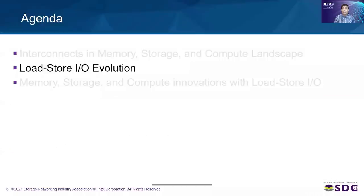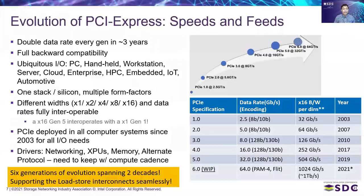We will now delve into the evolution of load store interconnect. PCI Express debuted with the release of PCI 1.0 in 2003. Since then, it has evolved through five generations, currently moving to the sixth generation. In every generation, we double the data rate while maintaining full backward compatibility, as shown in the table and graph here. Since PCI Express has been evolving in a cost-effective, scalable, and power-efficient manner with full backward compatibility, it has become the ubiquitous I/O across the compute continuum.